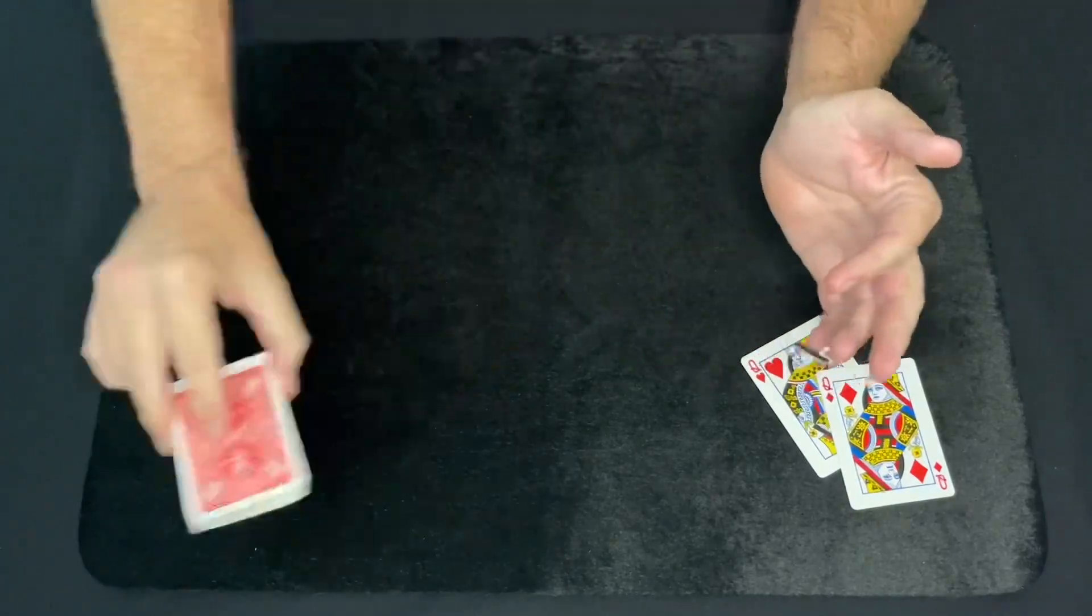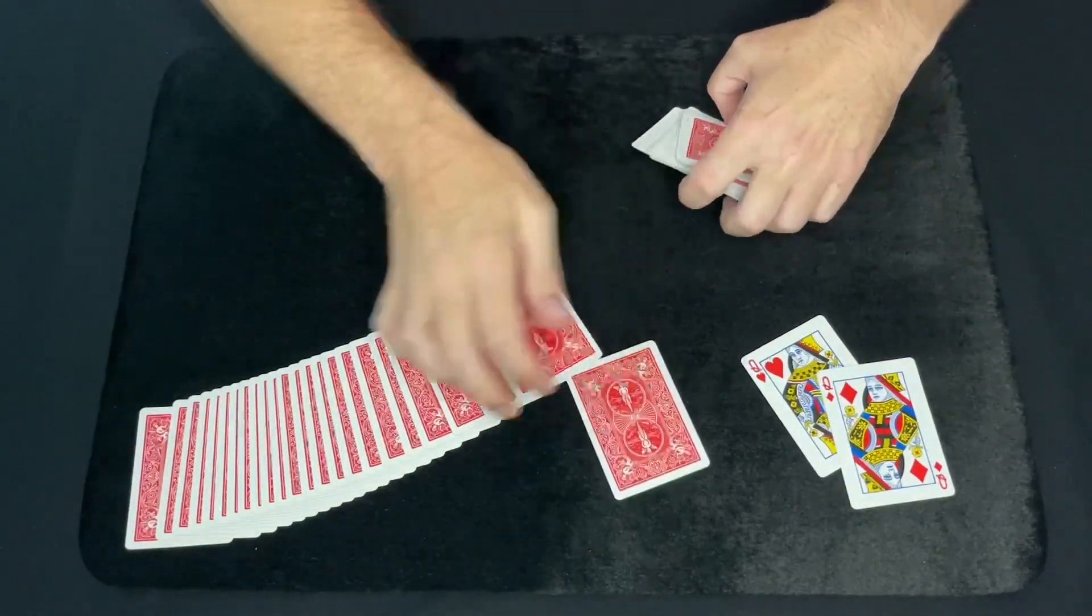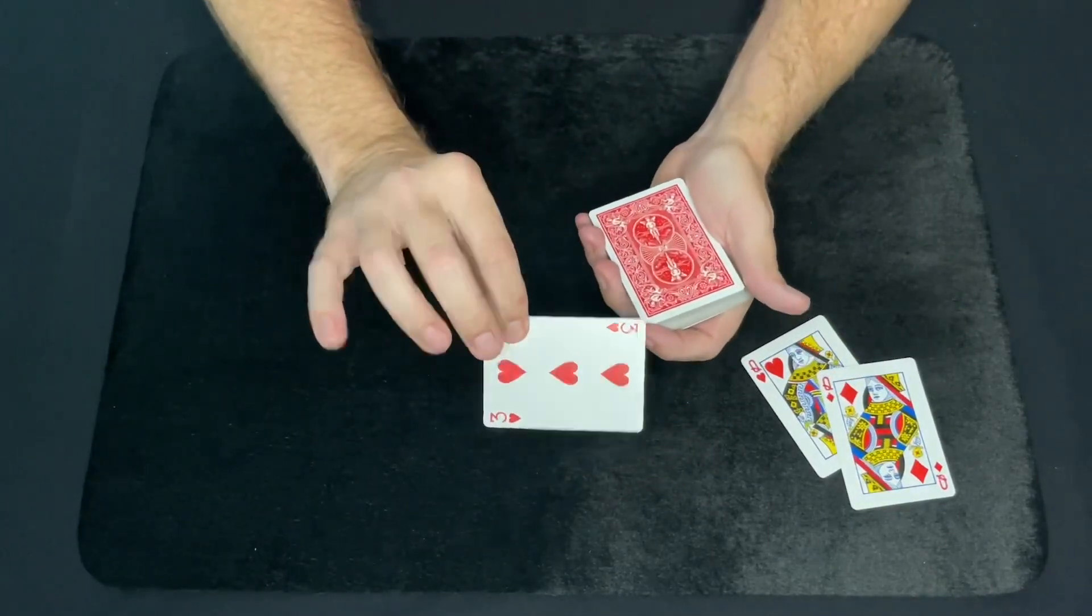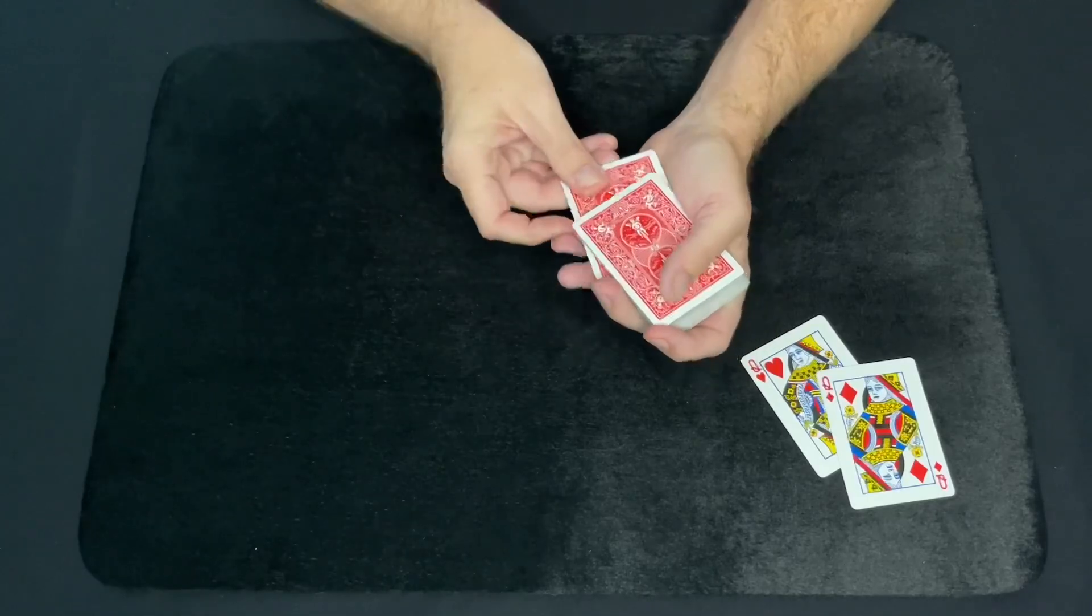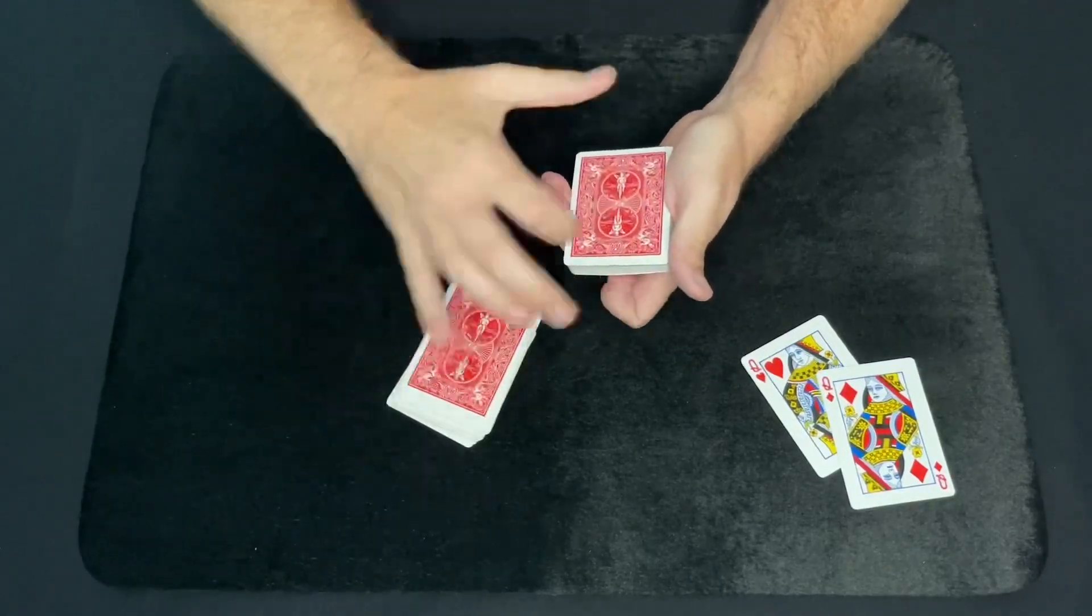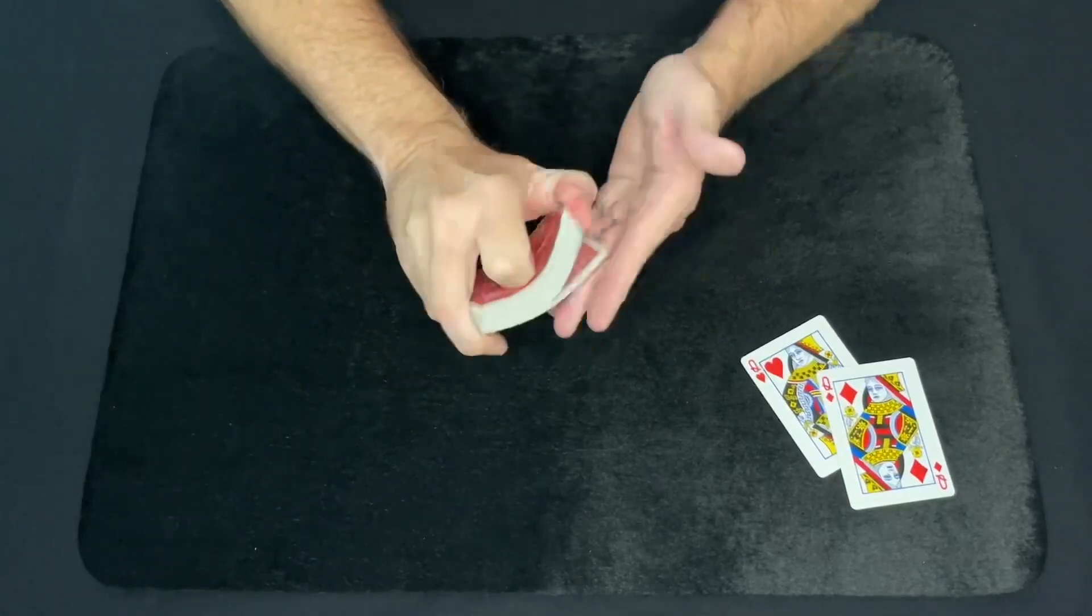And then you have a spectator just go ahead and select any card that they like. Let's say they pick that card right there. They look at it, remember it, don't show you. You take their card, lose it somewhere in the middle of the deck. You have no idea where it is.